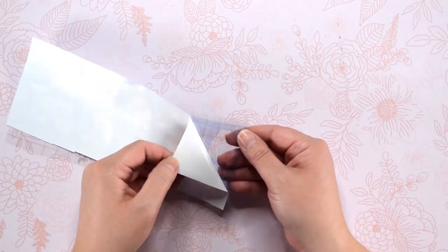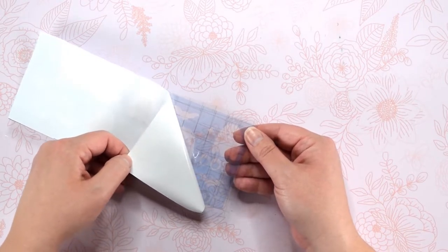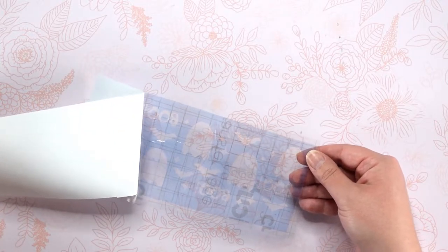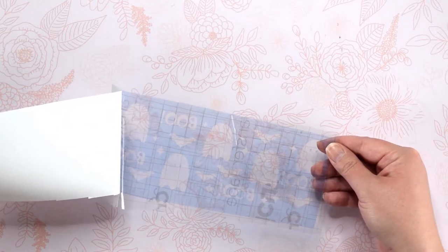Next, we will peel up the transfer tape with the stencil on it. Make sure to do this step slowly so you can make sure that all of the smaller pieces get picked up by the transfer tape too.